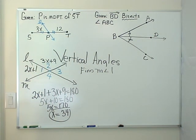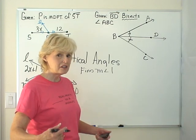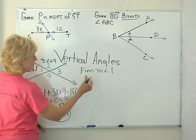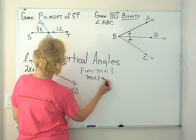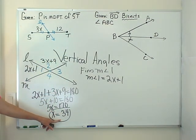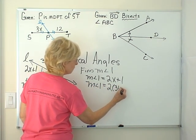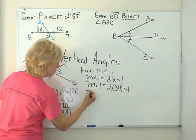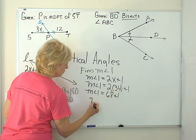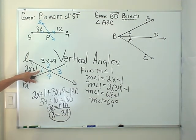But it might say sometimes find the measure of angle 1. If it says that, then we're not done when we see that x is 34. We found x but not the measure of angle 1. So let's look back at the measure of angle 1. There it is right there. It's 2x plus 1. So the measure of angle 1 is 2x plus 1. That's what we were given. And now we had to go through this and find x to be 34. So we substitute. Instead of x, we put in 34. And then we just use our arithmetic. 2 times 34 is 68 plus 1. The measure of angle 1 is 69 degrees.